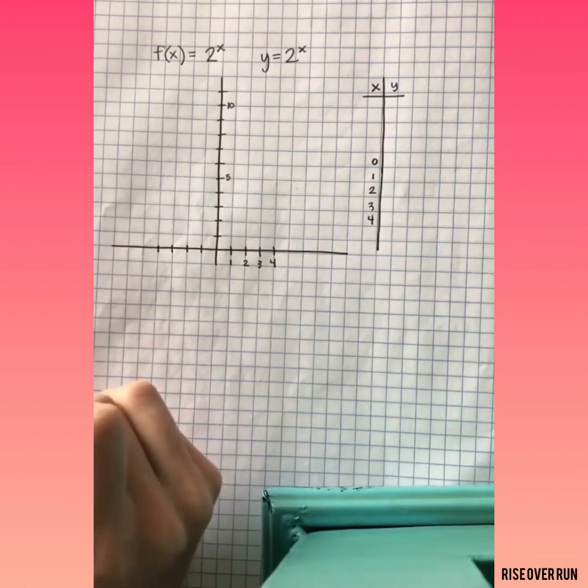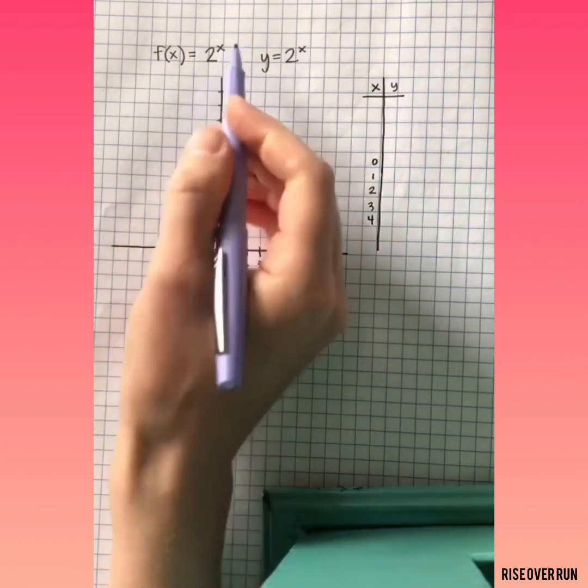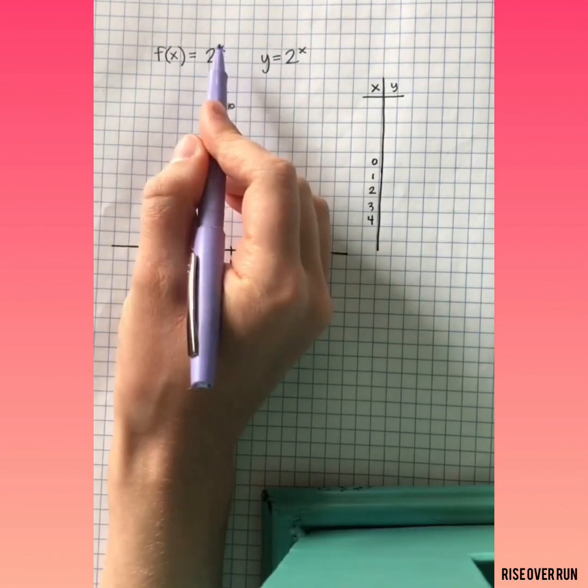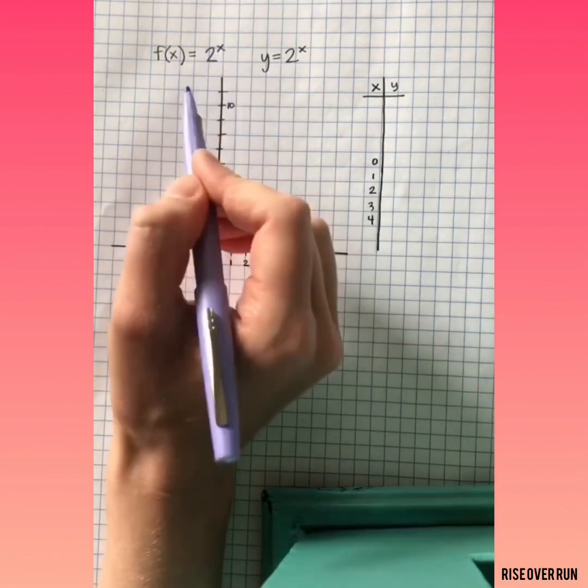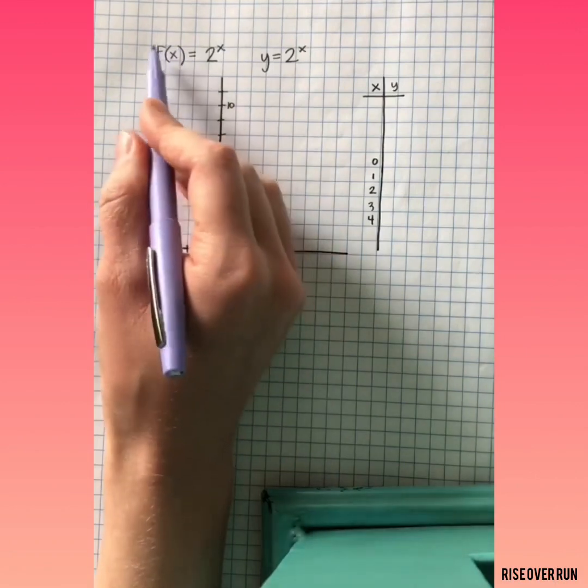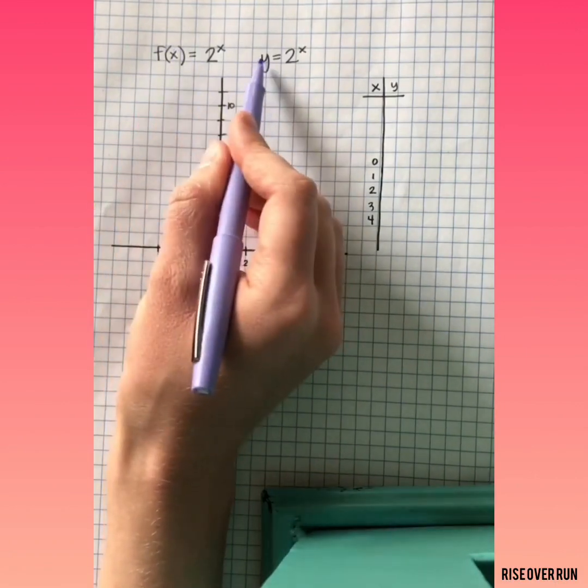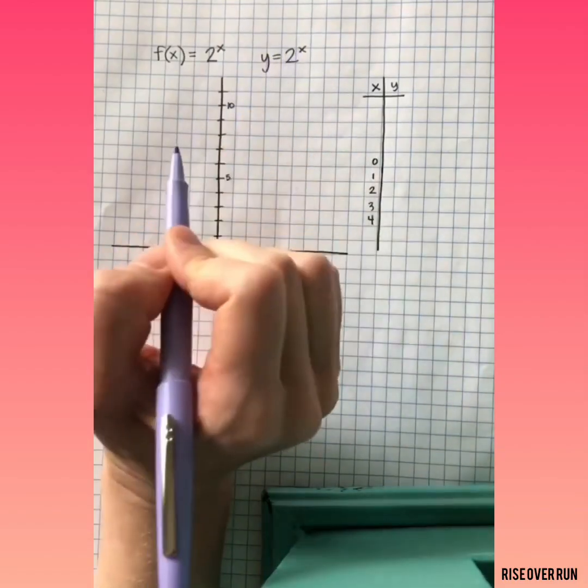Today, let's look at exponential functions. An exponential function means that the variable is in the exponent. So let's look at this one, 2 raised to the x power. You might see it written in function notation, or just y equals 2 to the x power.